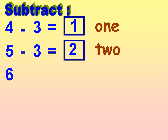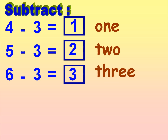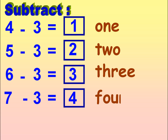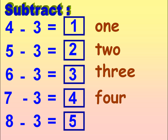6 minus 3 is equal to 3. T-H-R-E-E, 3. 7 minus 3 is equal to 4. F-O-U-R, 4. 8 minus 3 is equal to 5. F-I-V-E, 5.